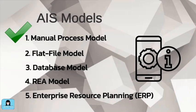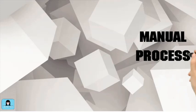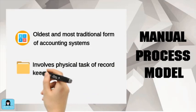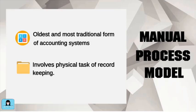Let's start with the Manual Process Model. The Manual Process Model is the oldest and most traditional form of accounting systems. It constitutes the physical events, resources, and personnel. It involves the physical tasks of record-keeping, including manual preparation of documents, updating records and files, and preparation of reports.